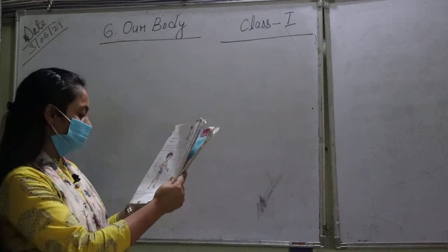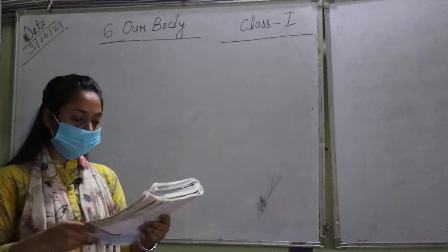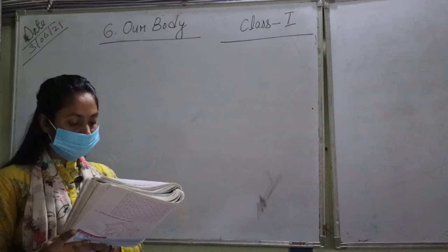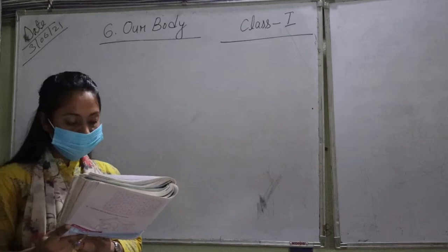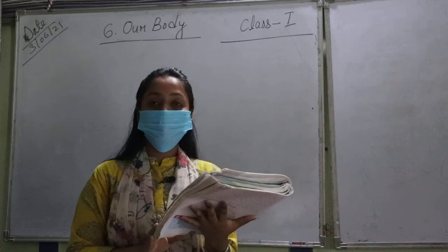So now we know the names of the different parts of the body and how these body parts help us. Each part of our body has its own importance. Our body is like a machine. So each part of our body has its own importance.